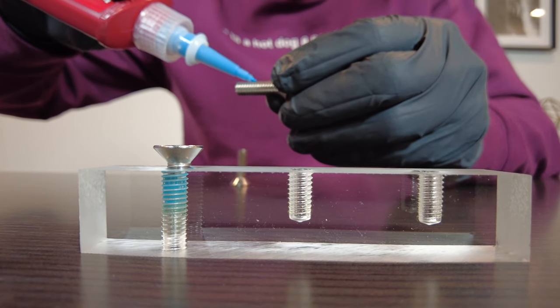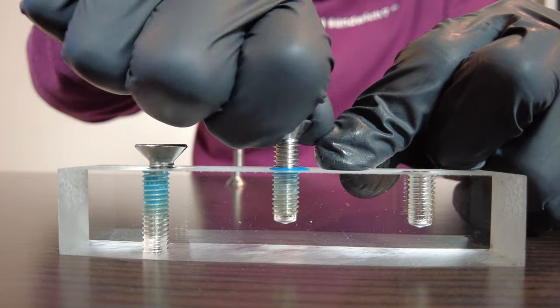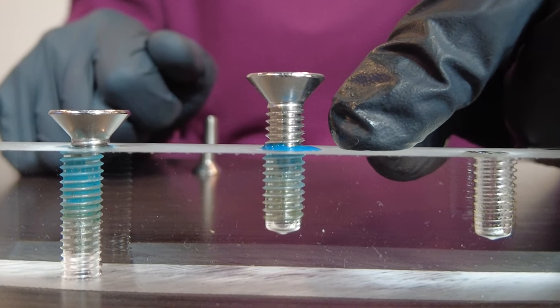But look what happens when we do this in a blind hole. As you screw in the bolt it forces the trapped air upwards through the threads, preventing the thread locker from migrating downwards.